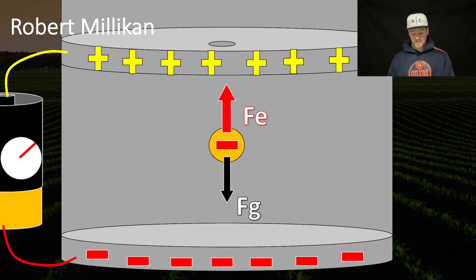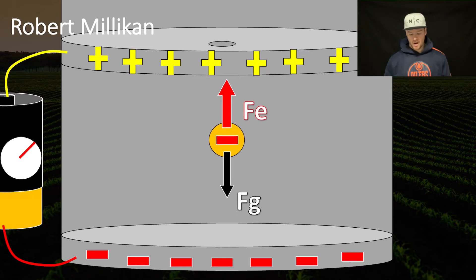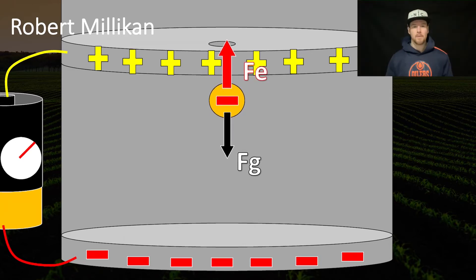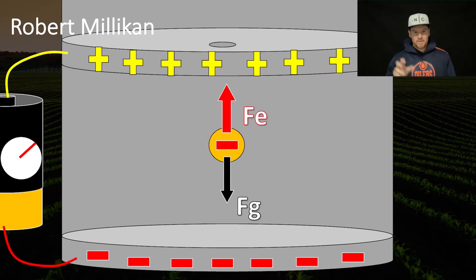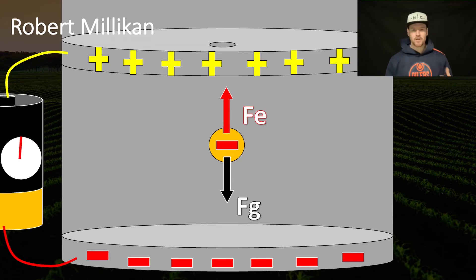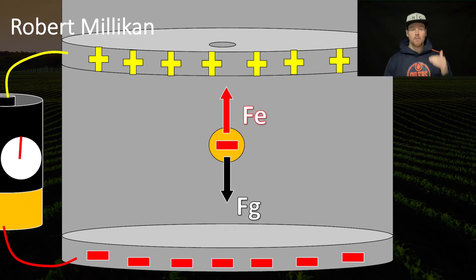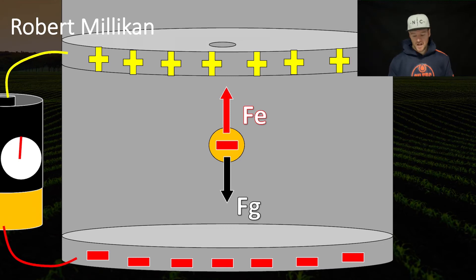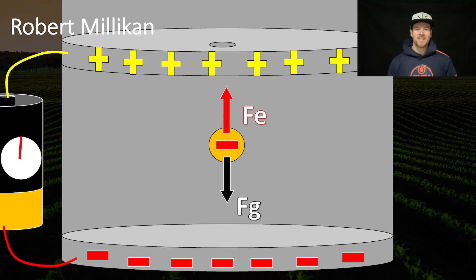If the electric force is greater than the gravitational force, then the droplet is going to rise up. So in the experiment, you'd be playing back and forth with that dial. We turn it back a little bit until the gravitational force and the electric force are going to be exactly equal. At this point, it's either going to move at a constant velocity if it had initial velocity, or it's going to just sit there and be levitating.